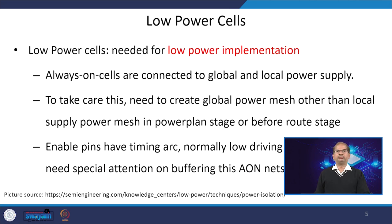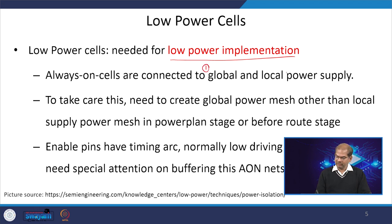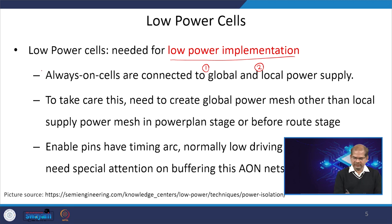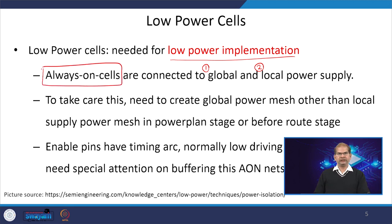Low power cells are an essential requirement for low power implementations. Whenever we have a low power implementation, we have two different power supplies: one is the global power supply and the other is the local power supply. The global power supply will be always on, but the local power supply will be on based on the requirement. Always-on cells sit inside the low power domain and are connected to both the global and the local power supply.